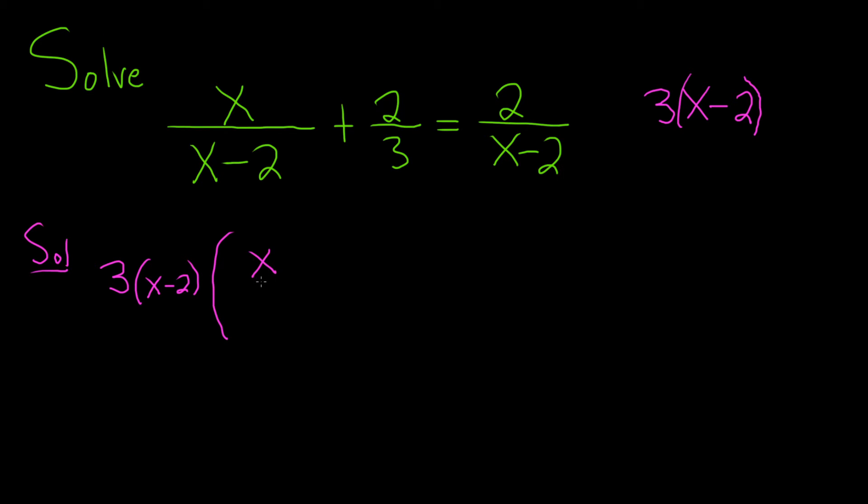and we have the entire left-hand side, x over x minus 2 plus 2 over 3, and that's equal to 3 times x minus 2. And then here we have 2 over x minus 2.